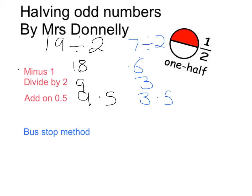Now the reason I'm adding on 0.5 is because I took away that 1 and then only added half of it back on, and half of 1 is 0.5.